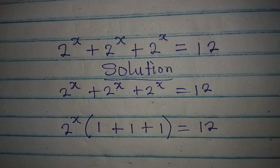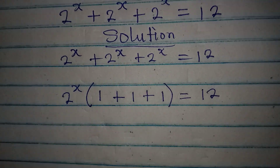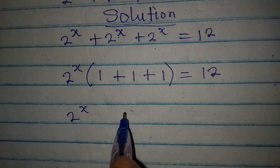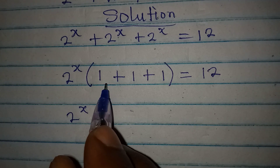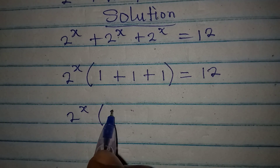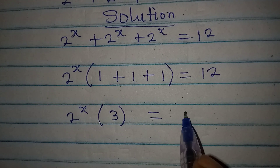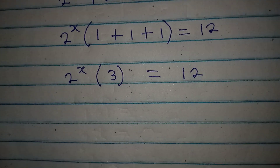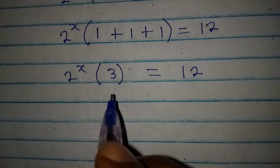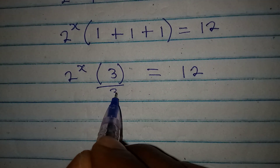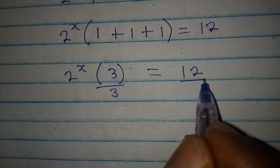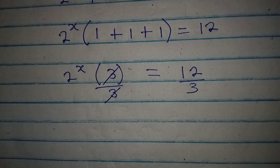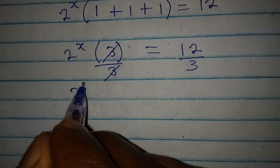This is equal to 12. So we have 2 to the power of x into (1 plus 1 plus 1), which is 3, giving us 12. We divide both sides by 3 — that cancels — and then 2 to the power of x is now equal to 4.